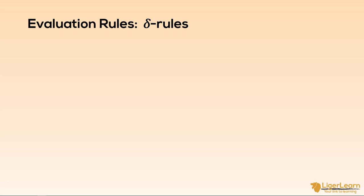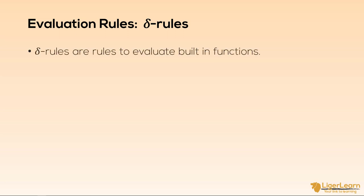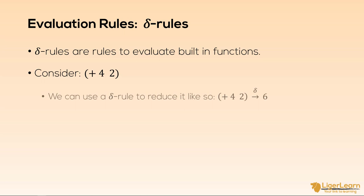Delta rules are rules which are used to evaluate built-in functions. They are quite easy to understand. Consider the lambda expression for 4 plus 2. We all know the answer should be 6, and that this expression should reduce to the value 6. So we reduce it by using a delta rule. Whenever we reach a point in an expression where we are using a primitive function that we know how to reduce, we say we are using a delta rule to reduce it. This is usually denoted with a right arrow with the delta symbol on top of the arrow.